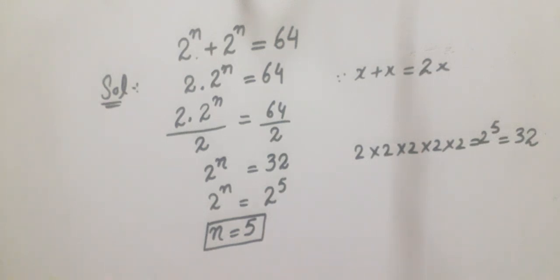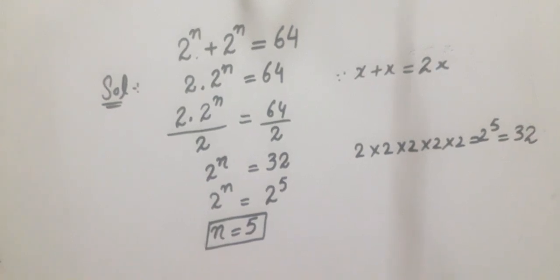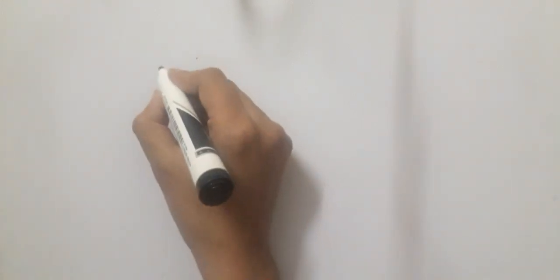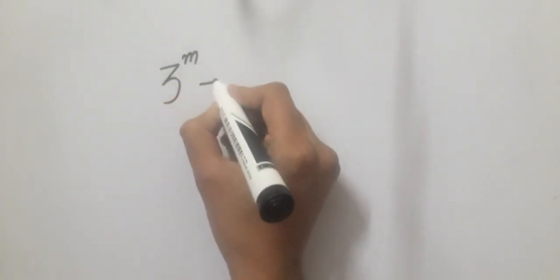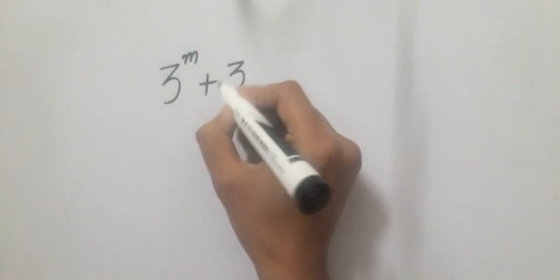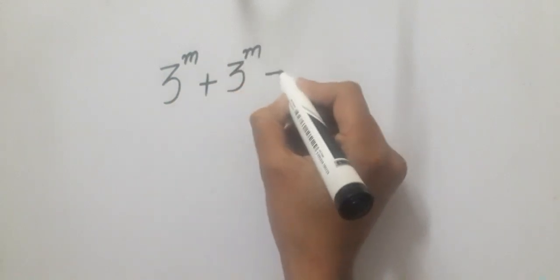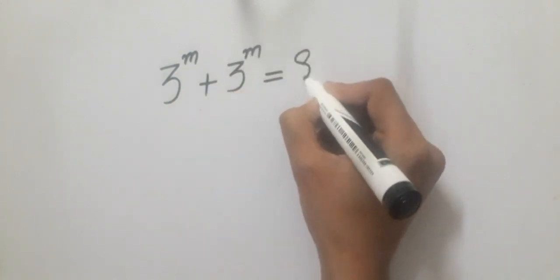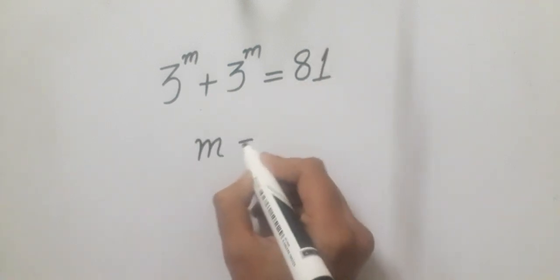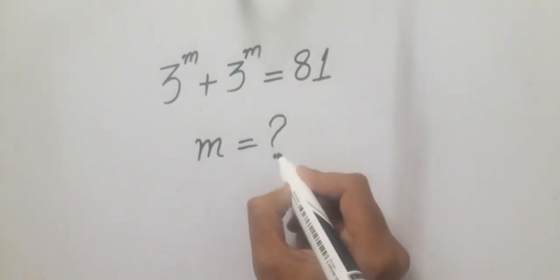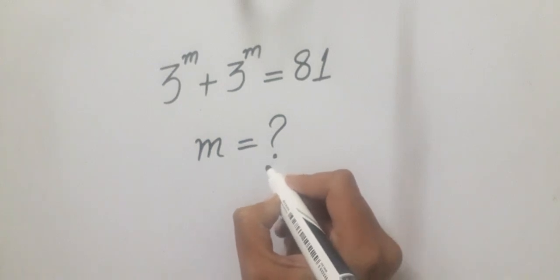And also tell in comments: 3 raised to power m plus 3 raised to power m which is equal to 81. Can you find what is the value of m? If you can solve this, tell in the comment section.